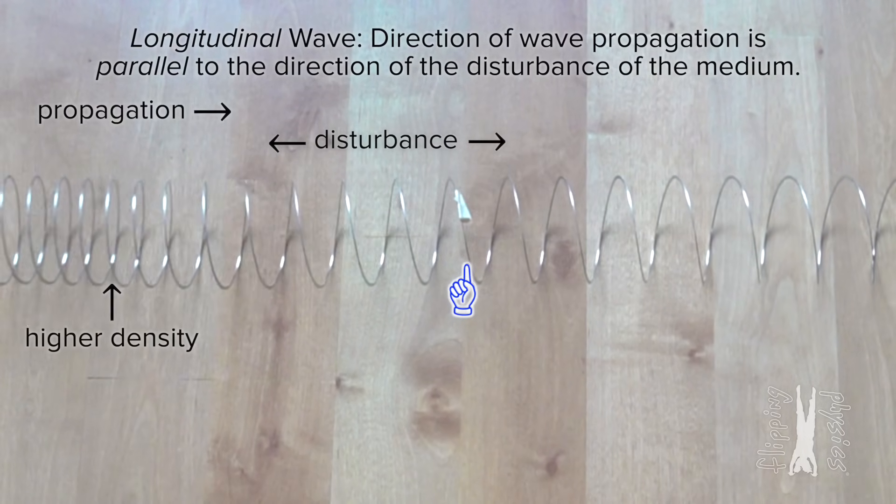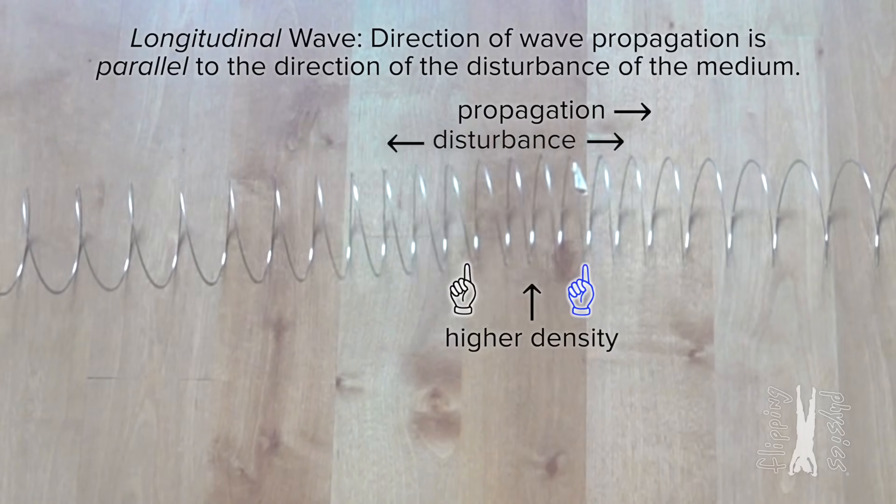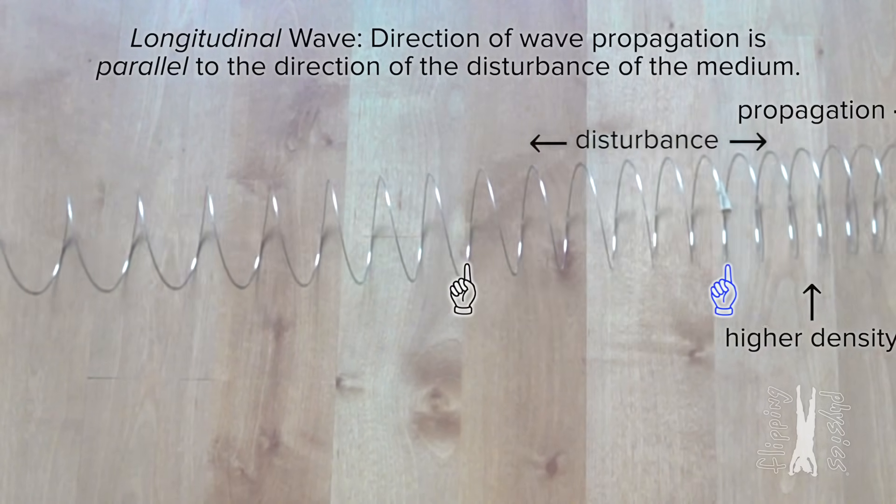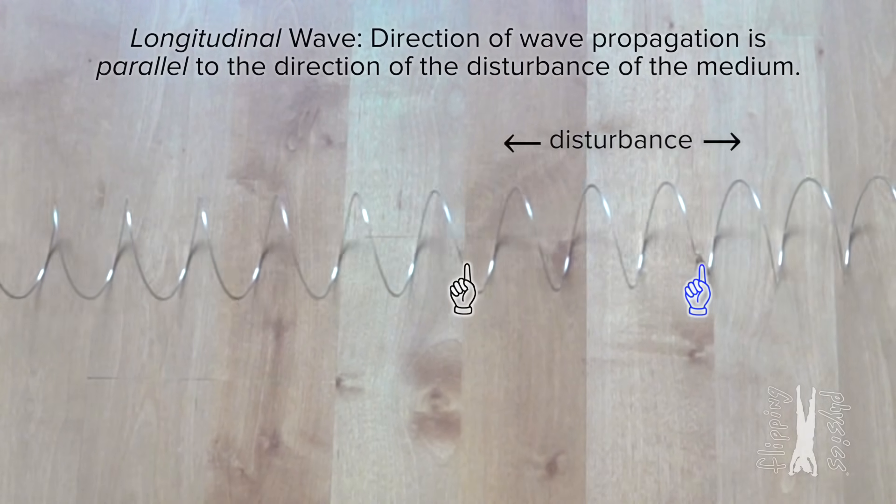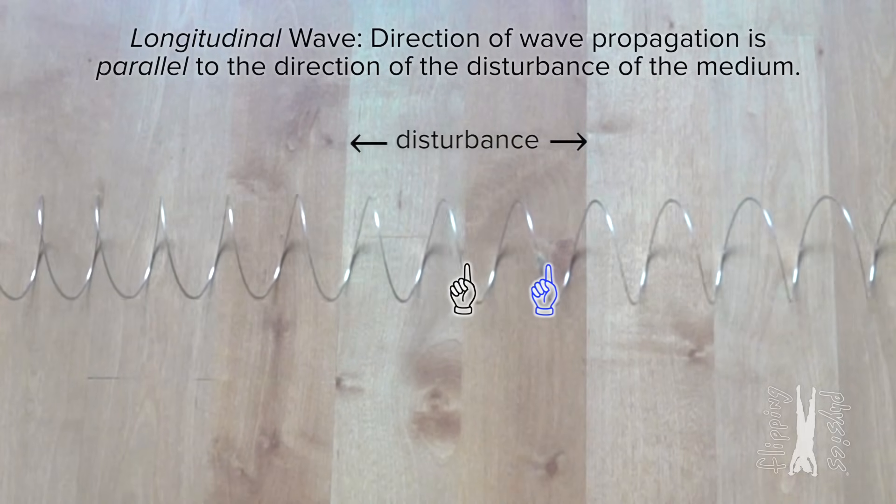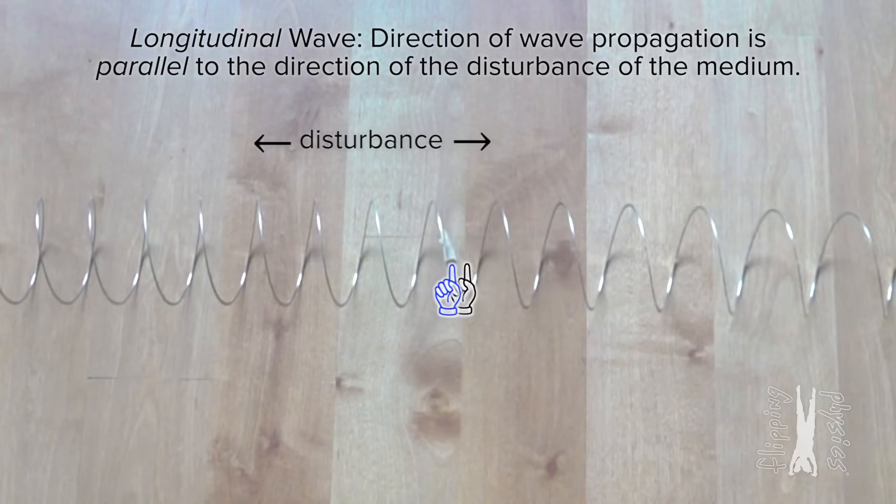This is what a full longitudinal wave pulse looks like. I have added a piece of tape so you can see the spring does come back to its original position, making the overall displacement of this wave equal to zero, or at least pretty close to zero.